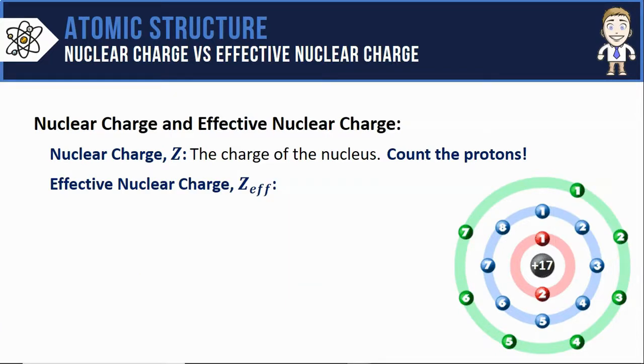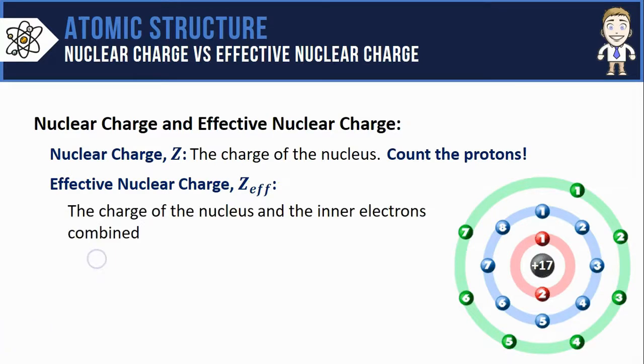The effective nuclear charge is a little more complicated, it still uses a symbol capital Z but with a subscript EFF for effective. So a good way to think about effective nuclear charge is the charge of the nucleus but combining that with the charges of the inner core electrons as well.